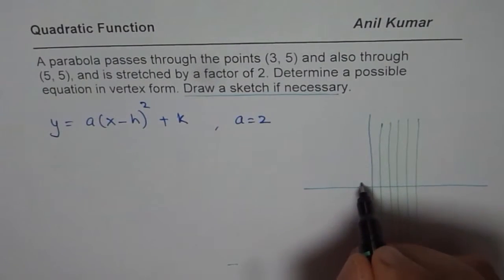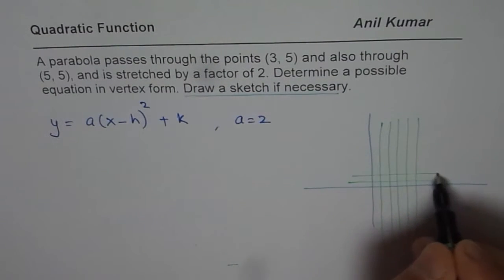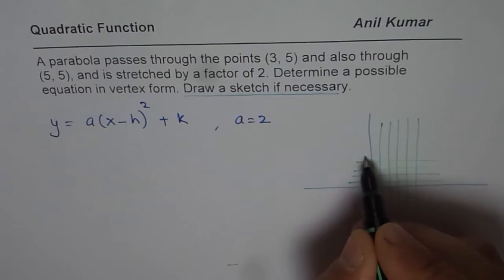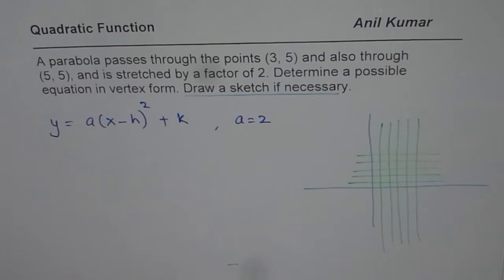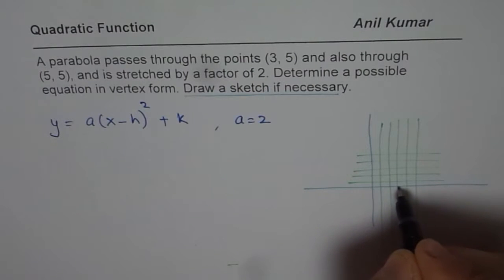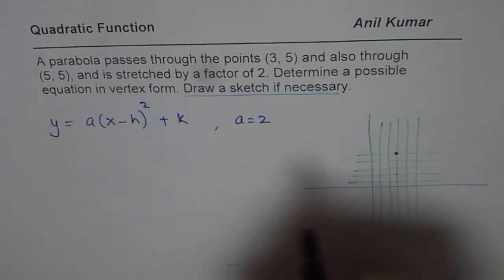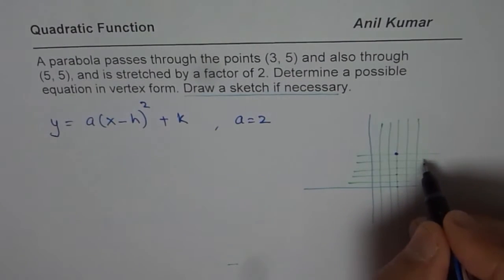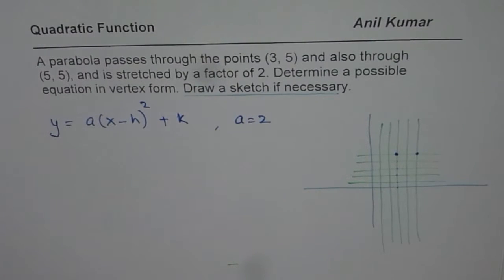So, let me just do this. And then 5 is the height. So, let us do like this. 1, 2, 3, 4, 5. Okay. So, we have two points (3, 5). So, 1, 2, 3 and 1, 2, 3, 4, 5. And we are given (5, 5). That means (5, 5) is right there. So, these two points are on the parabola.